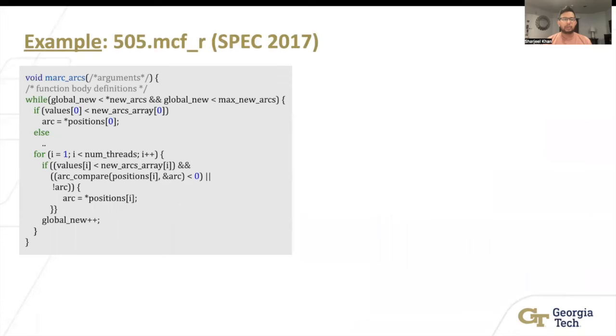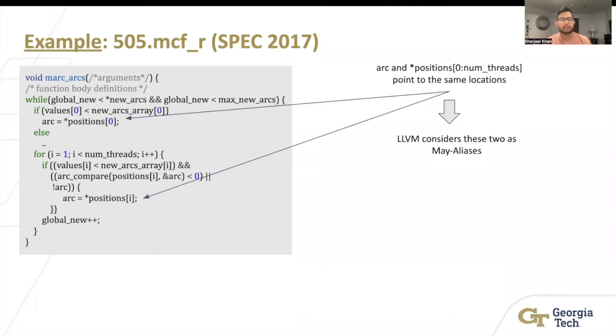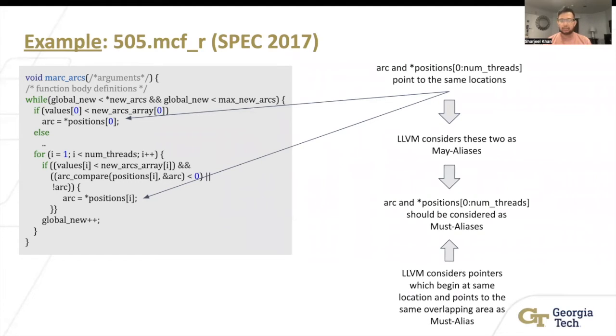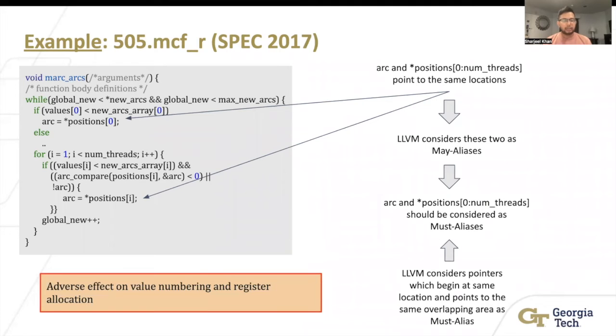In another case, for MCF, you have two variables, arc and positions which point to the same locations. But LLVM considers these two as may aliases. In LLVM, if two pointers begin at the same location and point to the same overlapping area, then they're considered as must aliases. So in actuality, arc and positions should be considered as must aliases. But because they aren't, there's adverse effects on global value numbering and register allocation because it cannot optimize this code better.